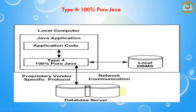Next I am going to discuss about which driver should be used. If you are accessing one type of database such as Oracle, Sybase, or IBM, the preferred driver is Type 4. If your Java application is accessing multiple databases at the same time, Type 3 is the preferred driver. Type 2 is useful in situations where a Type 3 or Type 4 driver is not yet available for your database. Type 1 is not considered a deployment-level driver and is typically used for development and testing purposes only — not useful for deployment in production.